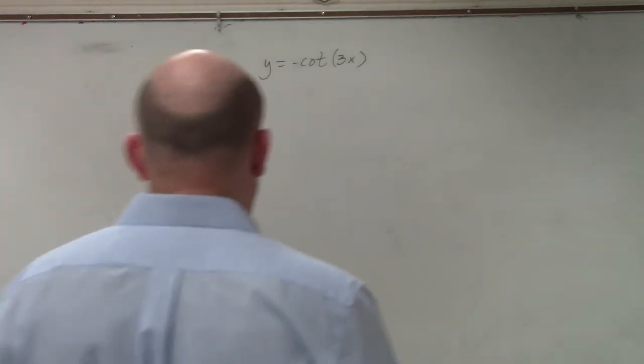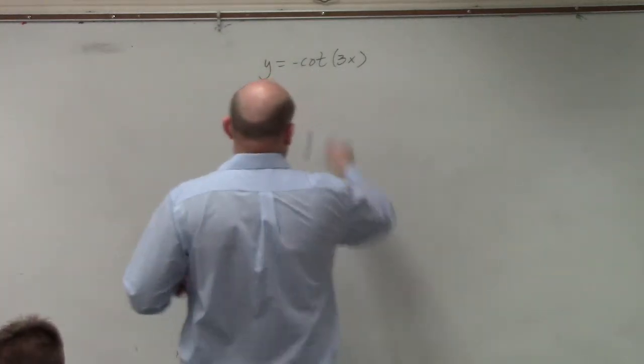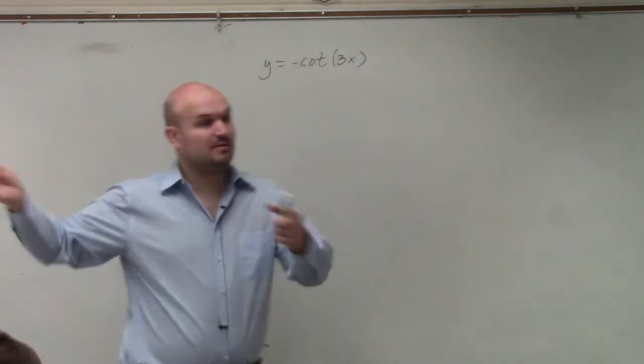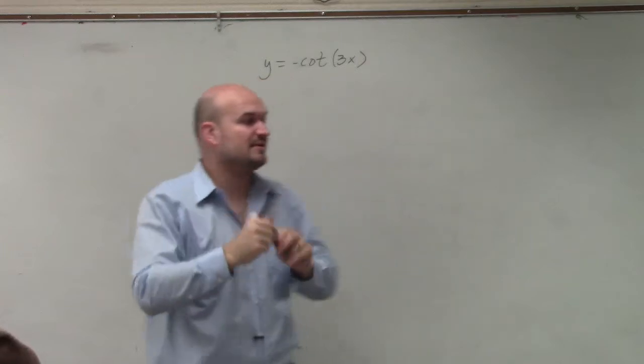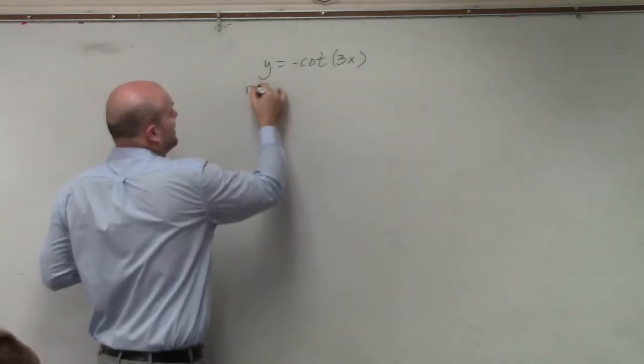First thing that I would do in this case is I would say, oh, I have a negative outside the function. Remember what we did last time? We held up our little signs. So when we multiply by negative on the outside of the function, that is a reflection over the x-axis.